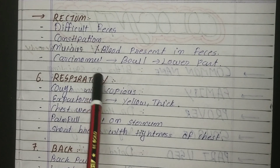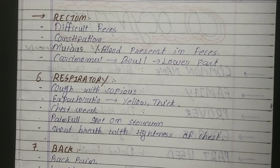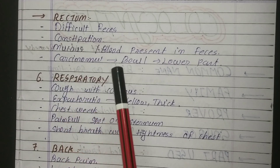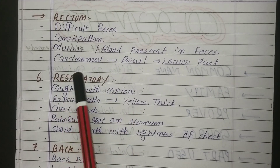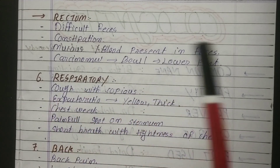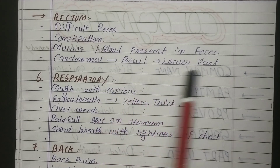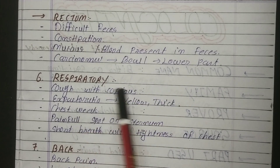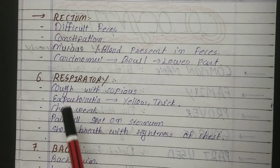On the rectum: we have already seen constipation and obstruction of the anal canal. Difficult feces — that is what we call constipation. Then mucus and blood are present in the feces. And carcinoma of the bowel, particularly the lower part of the bowel, which is the large intestine — specifically the rectum. Carcinoma of the bowel is an important indication for Ruta.